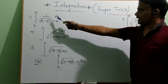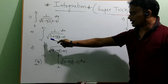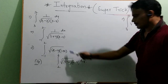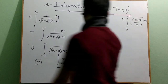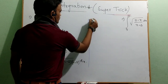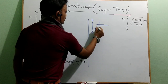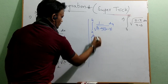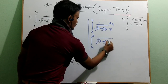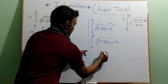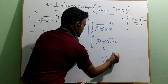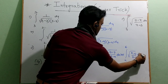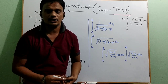Next model: integral from 3 to 7 of 1/√((x−3)(7−x)) dx, and integral from −1 to 2 of 1/(√(x−(−1))·√(2−x)) dx. These are all in the form of integral from a to b of 1/√((x−a)(b−x)) dx, or integral of √((b−x)/(x−a)) dx and similar variants.